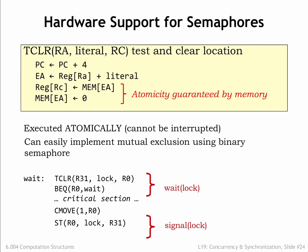Many ISAs support an instruction like the test and clear instruction shown here. The tclear instruction reads the current value of a memory location and then sets it to zero, all as a single operation. It's like a load, except that it zeros the memory location after reading its value. To implement tclear, the memory needs to support read and clear operations as well as normal reads and writes. The assembly code at the bottom of the slide shows how to use tclear to implement a simple lock.